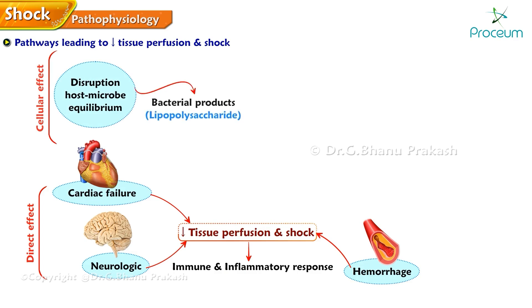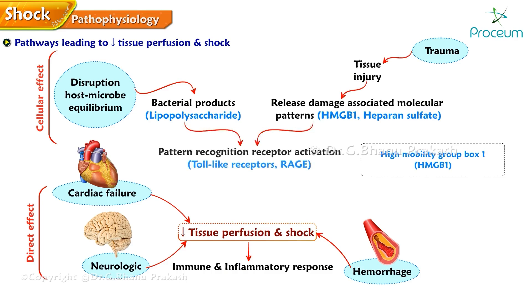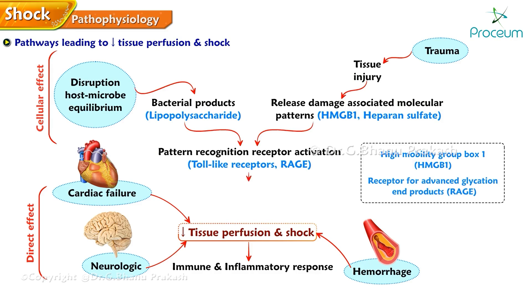Disruptions in the host-microbe equilibrium cause a release of bacterial products like lipopolysaccharide. Severe trauma can cause tissue injury; damage-associated molecular patterns (DAMPs) such as high mobility group box 1 (HMGB1) and heparan sulfate are released during tissue injury. These factors activate pattern recognition receptors like toll-like receptors and receptors for advanced glycation end products (RAGE), initiating immune and inflammatory responses that can lead to decreased tissue perfusion and the potential development of shock.